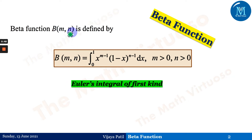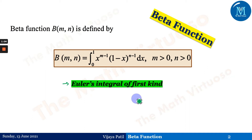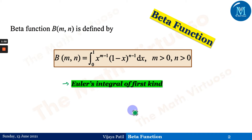This beta function is also known as Euler's integral of the first kind. It is important in calculus and analysis due to its close connection to the gamma function, which is itself a generalization of the factorial function. Many complex integrals can be reduced to expressions involving beta functions. The beta function is useful in computing scattering amplitudes and is also important in statistics for the beta distribution and beta prime distribution.